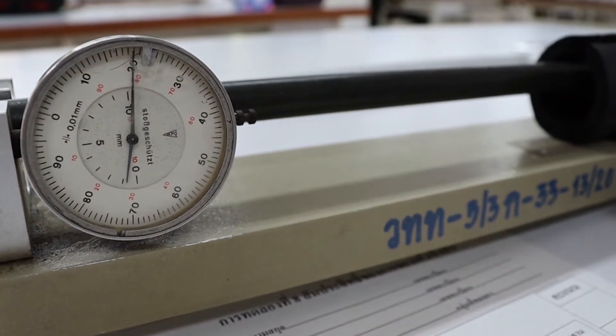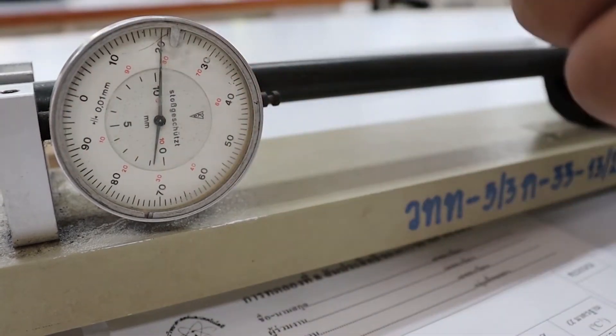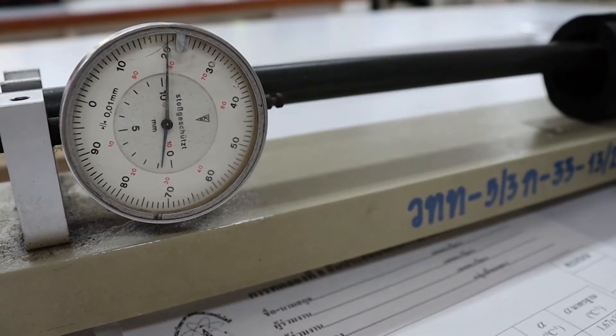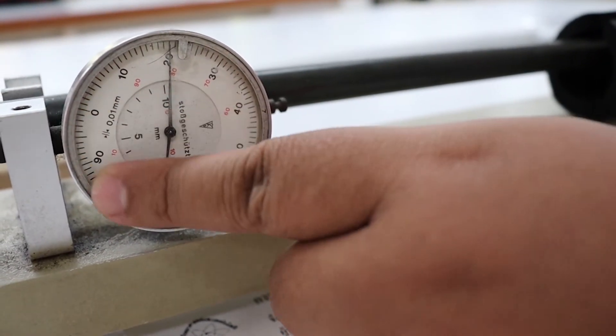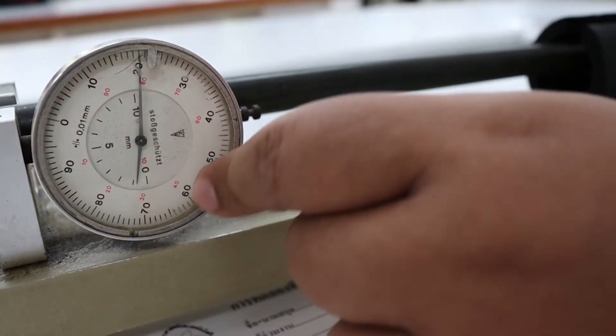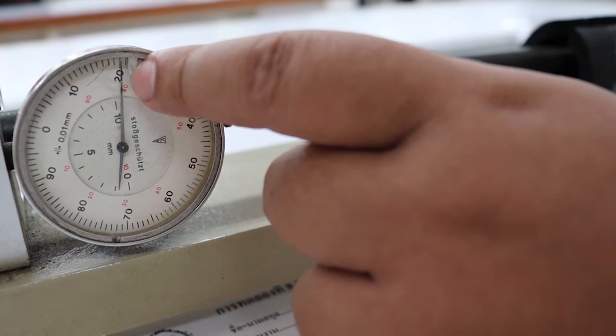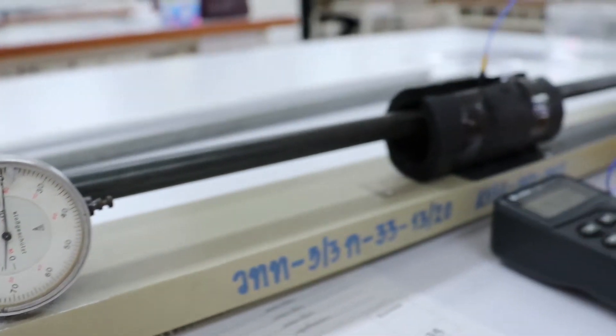Emphasis that the long hand of the dial gauge will move reversely. For example, the initial position is 0 and the final position is 20. This does not mean that it moves 20 divisions, but it moves 80 divisions. This number is the delta L.